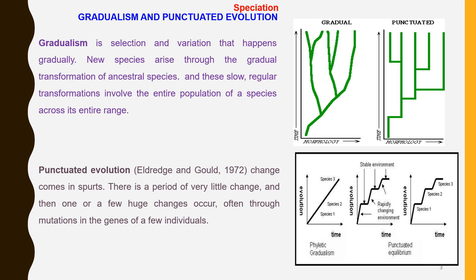As per the punctuated evolution theory proposed by Eldridge and Stephen Gould, the rate of speciation is not constant. The process occurs in sudden spurts. There would be long periods where no change occurs, known as the stasis period, depicted as horizontal lines in the figure. This is then followed by a sudden rapid change.